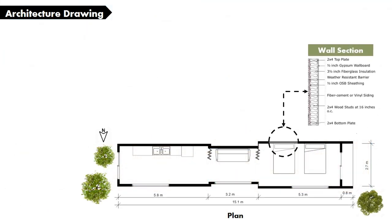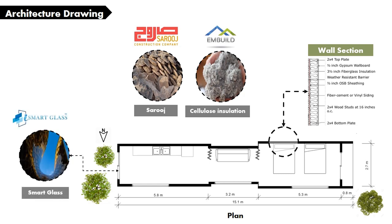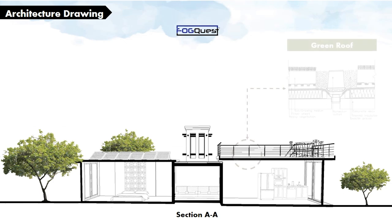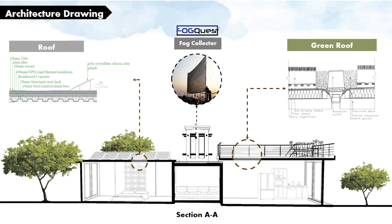We used 100% recycled, sustainable, and local materials in our project. Saroj, for example, is a traditional water-resistant mortar, highly compatible with different climates, with a U-value of 0.18. Silurus is an insulation material made from 85% recycled newspaper with a U-value of 0.2. Smart glass can change its transmission properties in response to factors such as temperature. A fog or humidity collector inside the Burjeel, made of polypropylene mesh, captures water droplets into a tank that can be used in the kitchen or green roof.